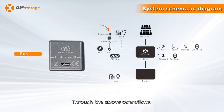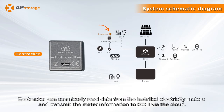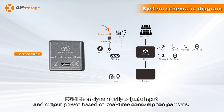Through the above operations, Echo Tracker can seamlessly read data from the installed electricity meters and transmit the meter information to Easy High via the cloud. Easy High then dynamically adjusts input and output power based on real-time consumption patterns.